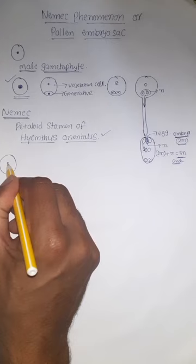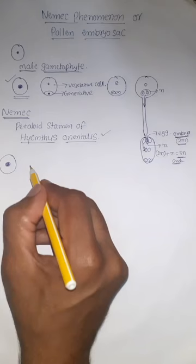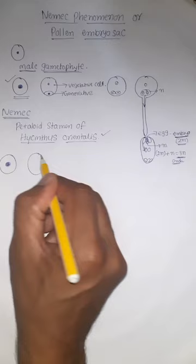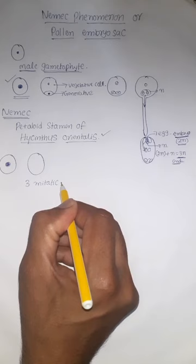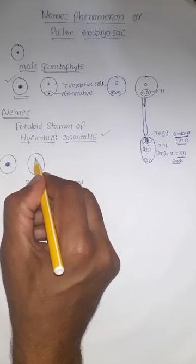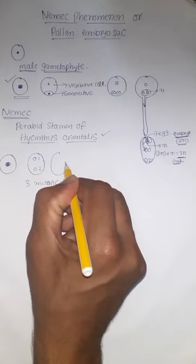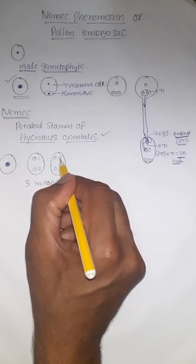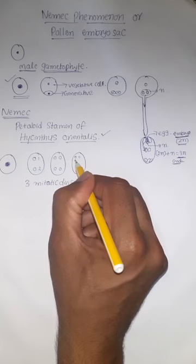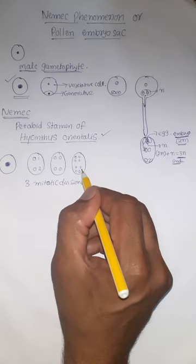Here, we have pollen grain with one nucleus. During the development, he observed these nucleus undergone 3 mitotic divisions. Means, first it undergone 1 division, so that we got 2 cells. In the 2nd mitotic division, 2 nuclei again divide into 2, 2. Means, we got 4. In the 3rd mitotic division, total, we got 8 nuclei. Total, 8 nuclei are formed.